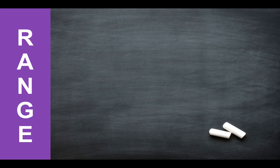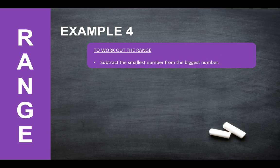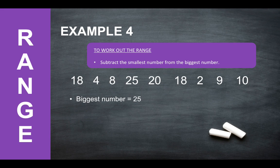Finally, how do you work out the range? So to work out the range, all you need to do is subtract the smallest number from the biggest number. So here's our set of data. So the biggest number is 25, the smallest number is 2. So you would do 25 minus 2 to give you the answer of 23.